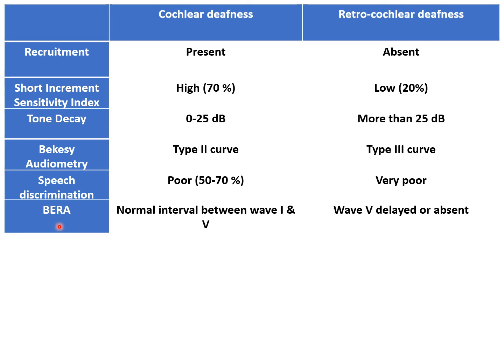BERA (Brainstem Evoked Response Audiometry) is an objective method of assessing the integrity of the auditory system. It produces waves 1 to 7 depending on the area of the auditory pathway from which they are generated. In cochlear deafness, there is a normal interval between the 1st and 5th wave. But in retro-cochlear pathology, the 5th wave is either delayed or absent. So by BERA, we can also distinguish between these two types of deafness.